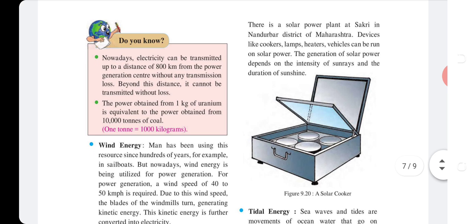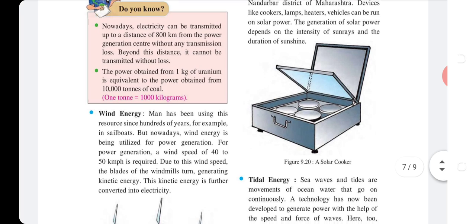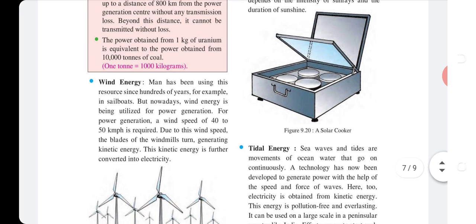Do you know: Nowadays, electricity can be transmitted up to a distance of 800 km from a power generation center without any transmission loss; beyond this distance it cannot be transmitted without loss. Also, the power obtained from 1 kg of uranium is equivalent to the power obtained from 10,000 tons of coal.